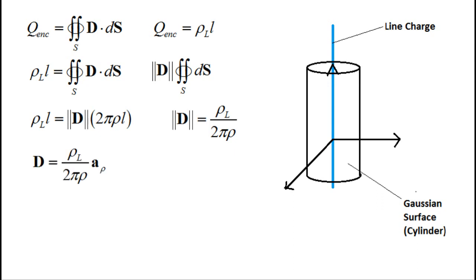Since the field will only have a radial direction, we know that the unit vector is A sub Rho. From here, we can rewrite D and solve for E.